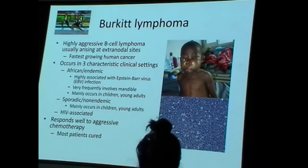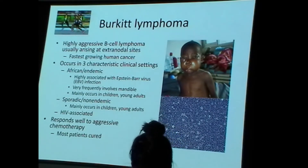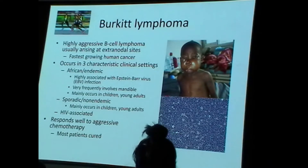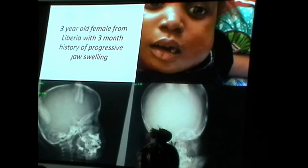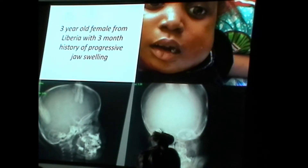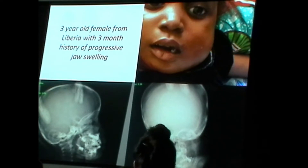Burkitt lymphoma occurs in three clinical settings. The most important is the African or endemic clinical setting — this is highly associated with Epstein-Barr virus. Burkitt lymphoma has a very particular and unique chromosomal translocation involving chromosome 8, which is one reason we learn about it. It can also occur in an HIV setting, and it can occur sporadically — though it is far more common in Africa and other parts of the world than in the U.S.